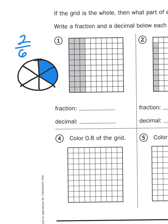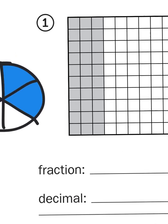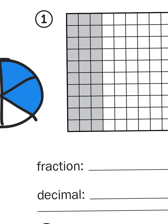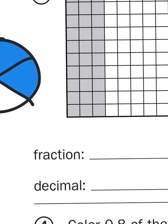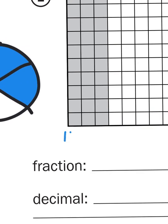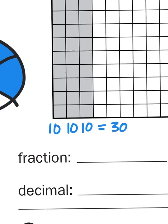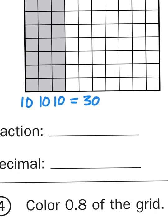When I look at this picture for number one, I see three whole columns of squares shaded in — three groups of 10 — that would give me a total of 30 squares shaded in, so my fraction would be 30 hundredths.